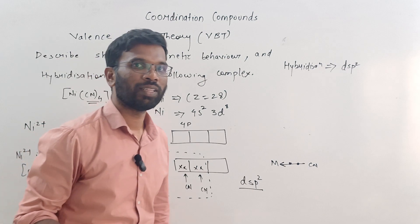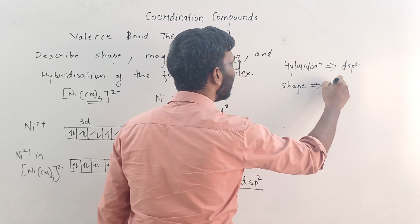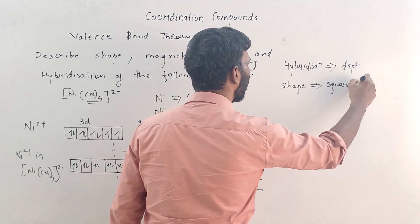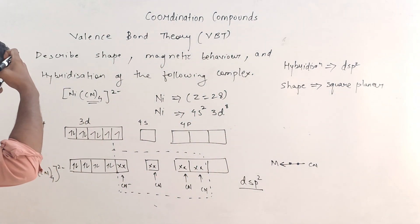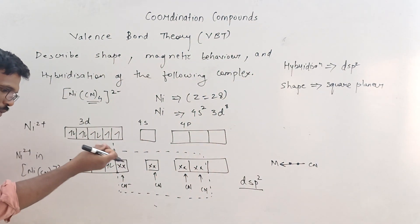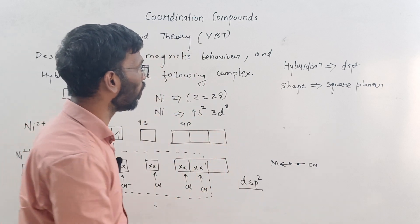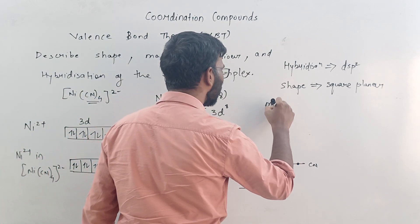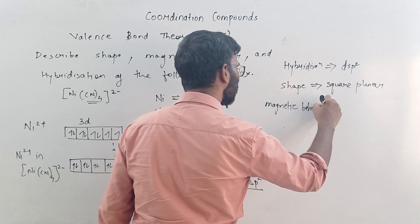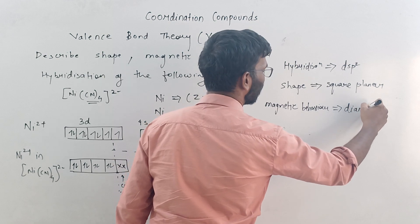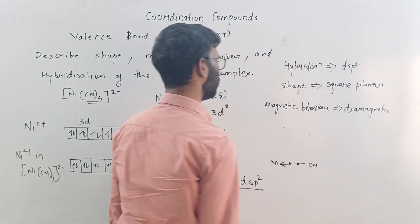The hybridisation is DSP2. Since hybridisation is DSP2, the shape is square planar. For magnetic behaviour, there is not a single unpaired electron — all electrons are paired. Therefore the magnetic behaviour is diamagnetic.